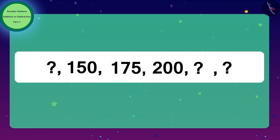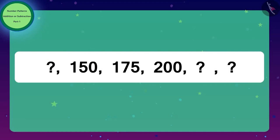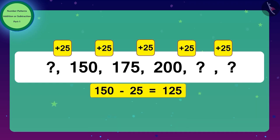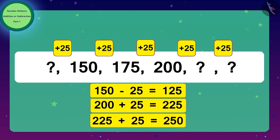Before we check if Raju's answer is correct, can you find the answer to another similar pattern? Here, the first number is missing. We will begin from the second number. The pattern adds 25 to get the next number. So to get the first number, 25 must be subtracted from the second number. Once you understand the pattern, you can easily write the next number to complete it.